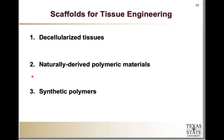Number two would be naturally derived polymeric materials. They have benefits and drawbacks. One of the benefits is that they are degradable, but at times it might be difficult to match the degradation rate to the tissue growth. There is a small possibility of immunogenicity when utilizing natural materials. Another problem is that there can be variability in the source because they are not synthesized — you obtain whatever you are able to obtain from the animal, plant, or human you are deriving these materials from. But the benefit is that they support cell attachment and proliferation because they have the right molecules to do so.